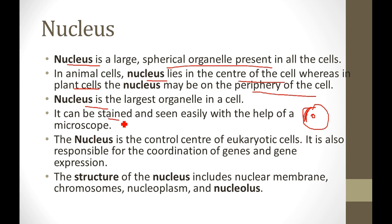It can be stained. Stained means that when we observe or experiment in biology, to make that organelle or organism clearly visible, we add a colored solution — that colored solution is called a stain. We stain it so that it will be easily visible under a microscope. The next point is that the nucleus is the control center of eukaryotic cells. In eukaryotic cells, the nucleus is properly defined, whereas in prokaryotic cells it is not properly defined. Nucleus is the control center because there are chromosomes, genes, and DNA present inside it.